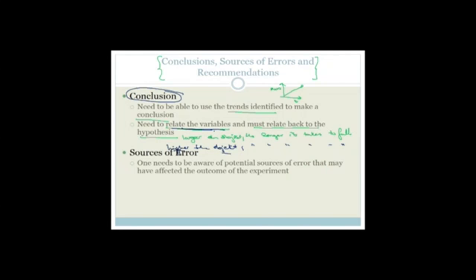Sources of error: one needs to be aware of potential sources of error that may have affected the outcome of the experiment — for example, different people measured the time it took for the object to fall, causing experimental error, or there were errors of parallax with looking at how high the object was. Recommendations should state how to improve the experiment. So if your source of error was different people measuring the time, your recommendation would be to use one person to measure the time.